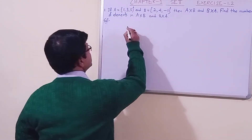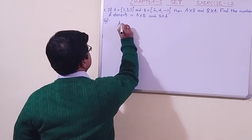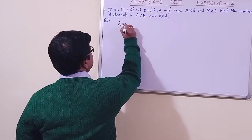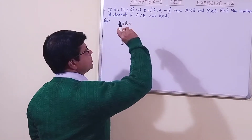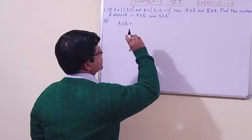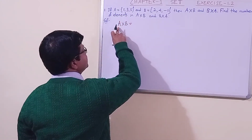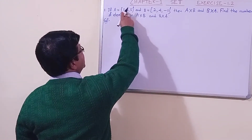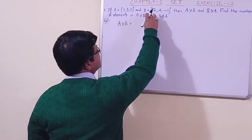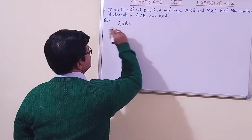We have to make the ordered pairs in the Cartesian product. The concept is that when we make A cross B, the elements of A are the x-coordinates and the elements of B are the y-coordinates.